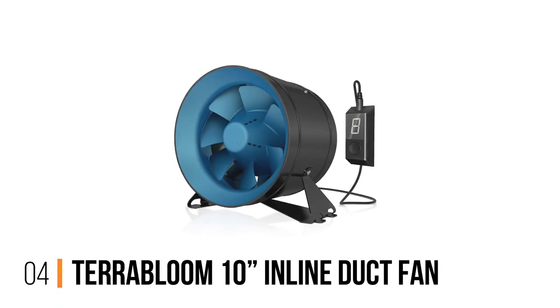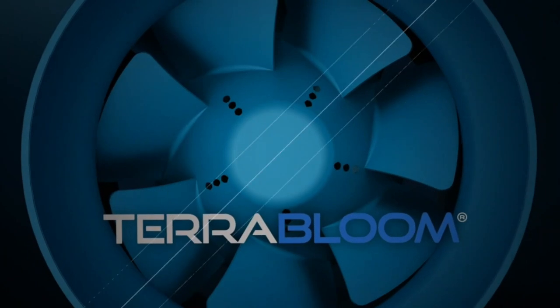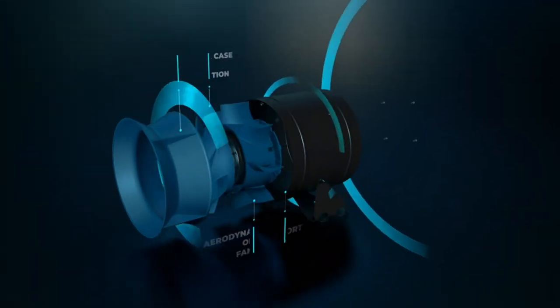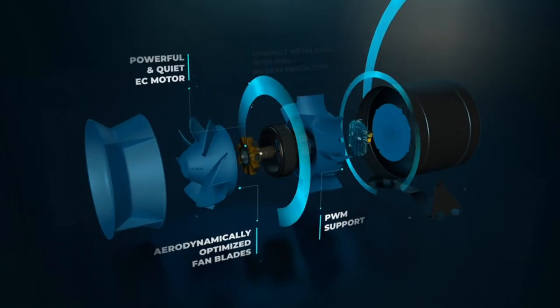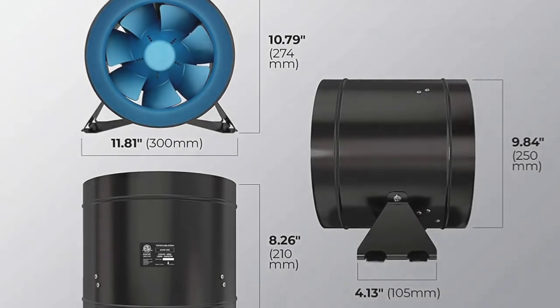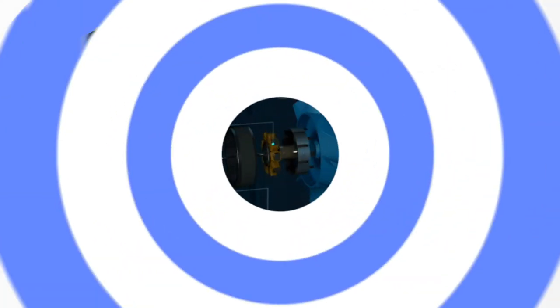Number 4, TerraBloom 10-Inches Inline Duct Fan. If you need a powerful grow room exhaust fan, this might be the model for you. It boasts an impressive airflow of 1065 CFM. But this is offset against its maximum noise level of 65 dB. This makes it the most powerful and loudest fan on this list.